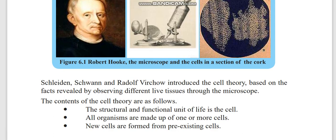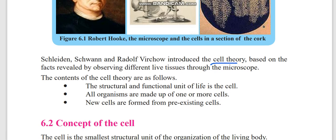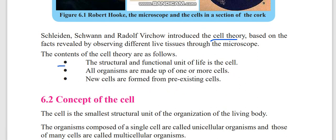There were three people who introduced the cell theory: Schleiden, Schwann, and Rudolf Virchow. There are three concepts in cell theory: the structure and functional unit of life is the cell, all organisms are made up of one or more cells, and new cells are formed from pre-existing cells.